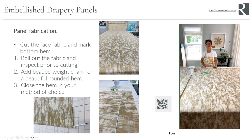Now it's time to start fabricating the drapery panel. I cut the face fabric long enough for a double four-inch bottom hem and allowed eight inches for the double folds at the top. I like a nice rounded bottom hem, so to avoid a flat crease I add beaded weight chain in that bottom fold.